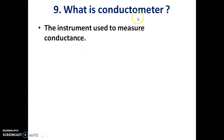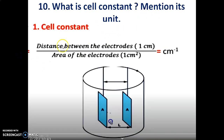What is a conductometer? It is an instrument used to measure the conductance value. What is cell constant? Mention its unit. The ratio of distance between the two electrodes to the area of the electrode is called cell constant. The unit is per centimeter.